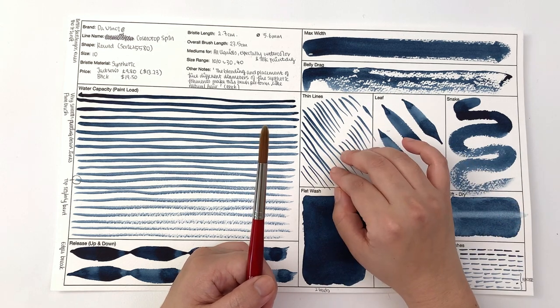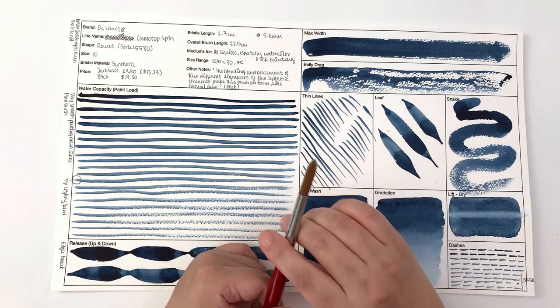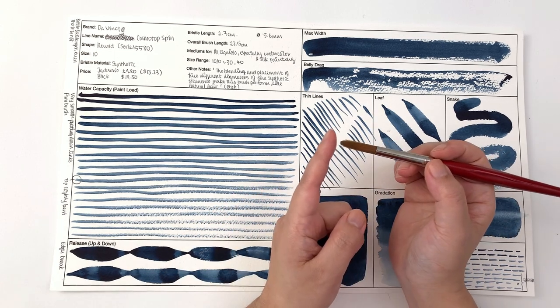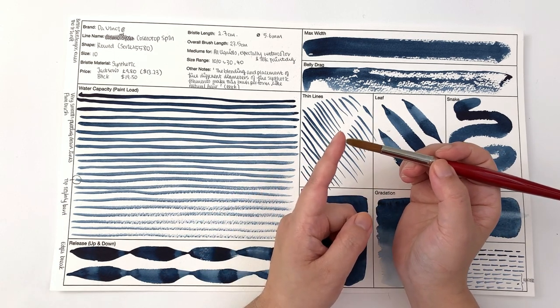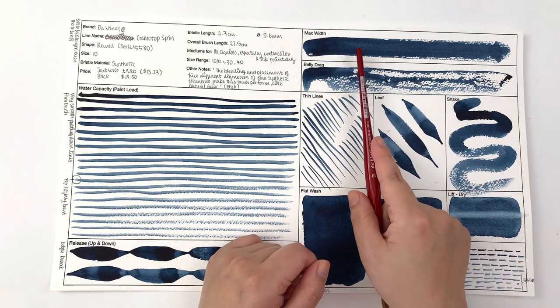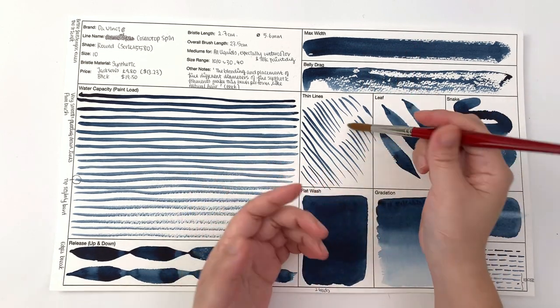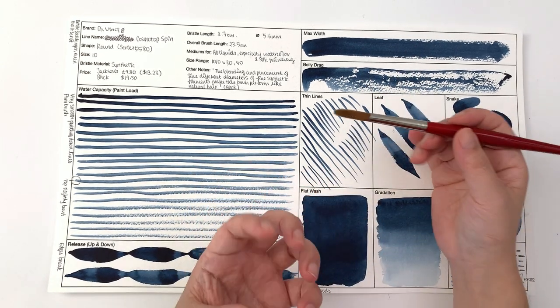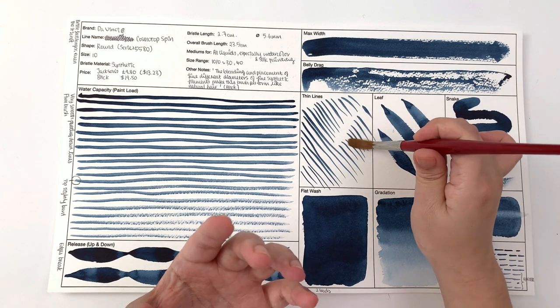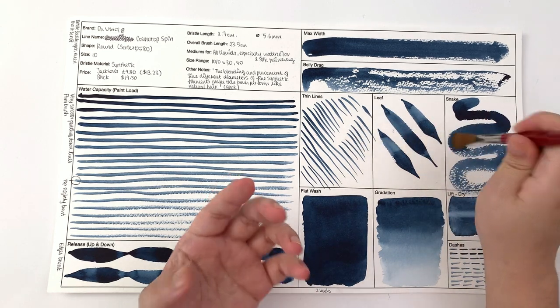The tip does feel like a little bit blunt rather than pointed and then for the max width it doesn't spread out that much because you don't have that width and therefore you don't have the density of brush to spread out.